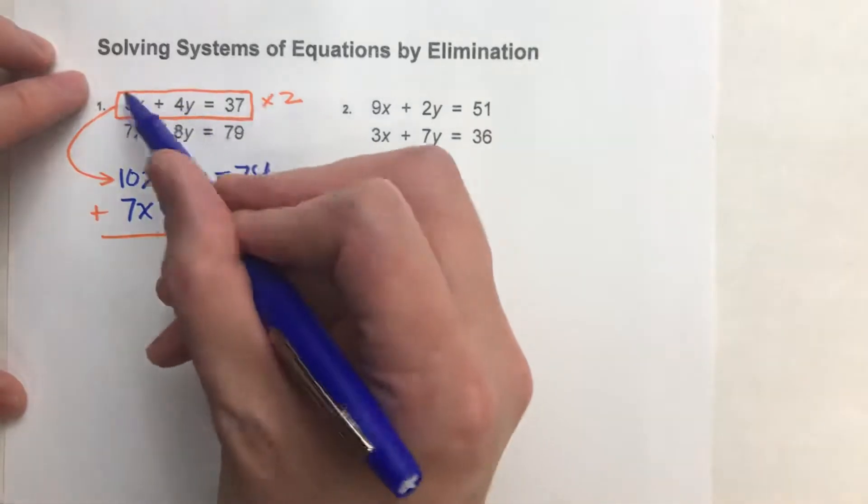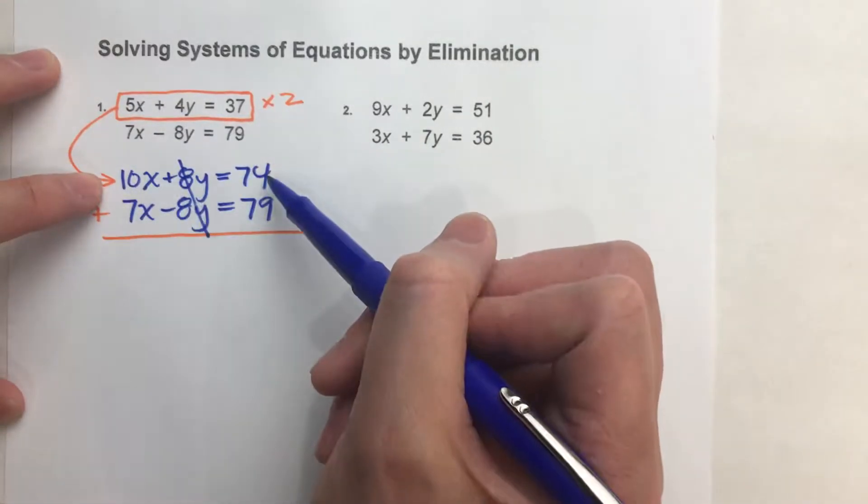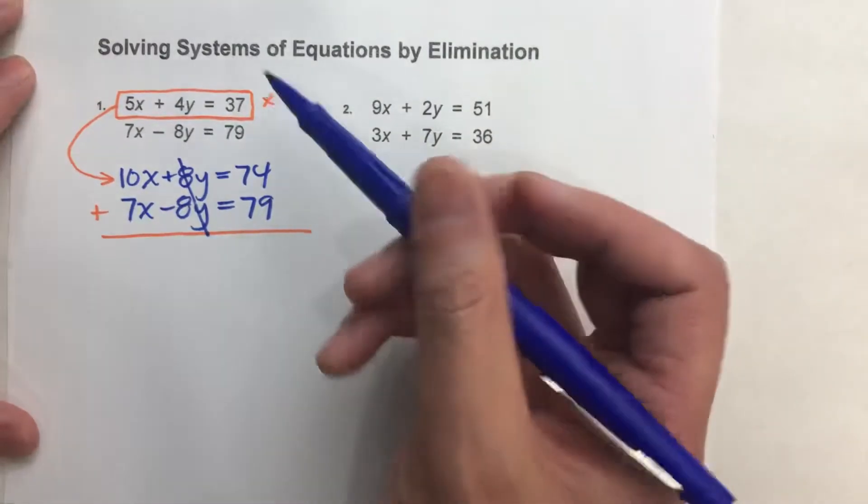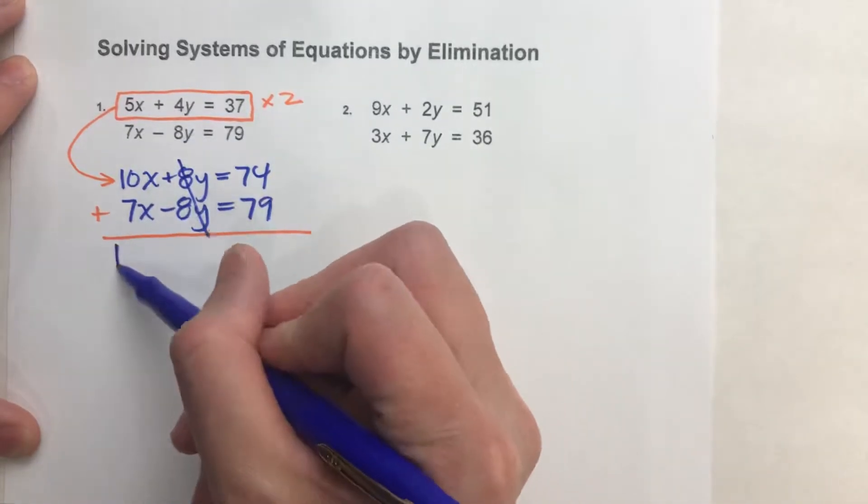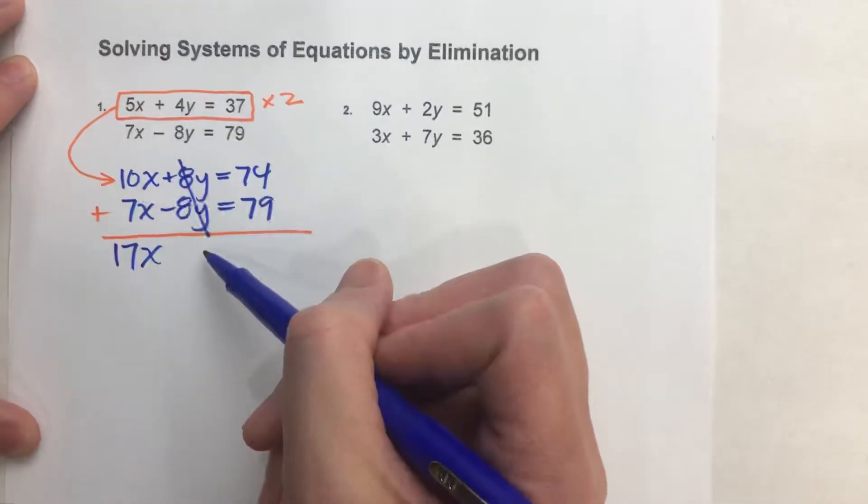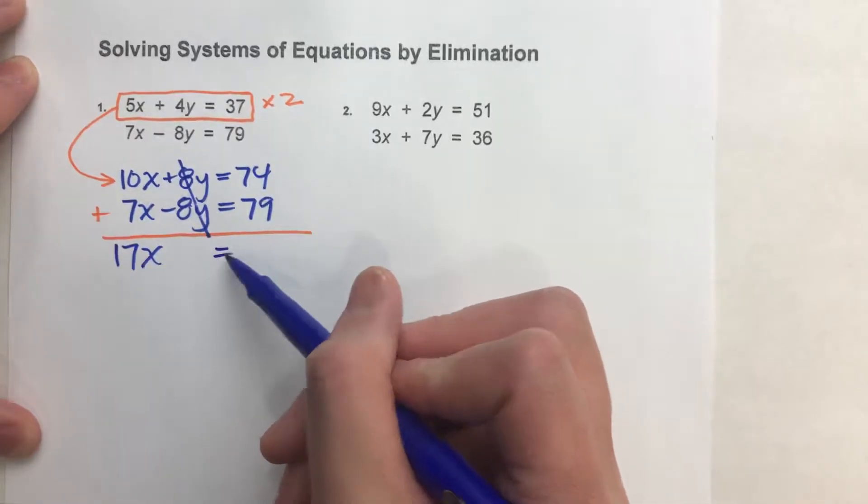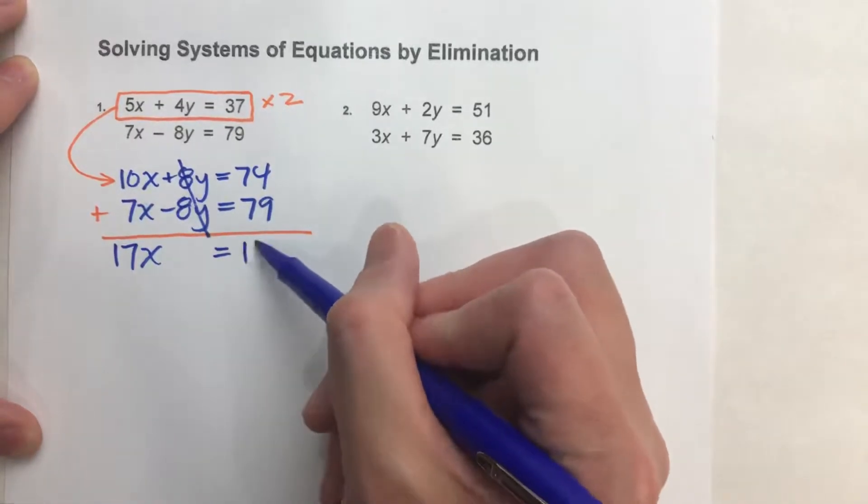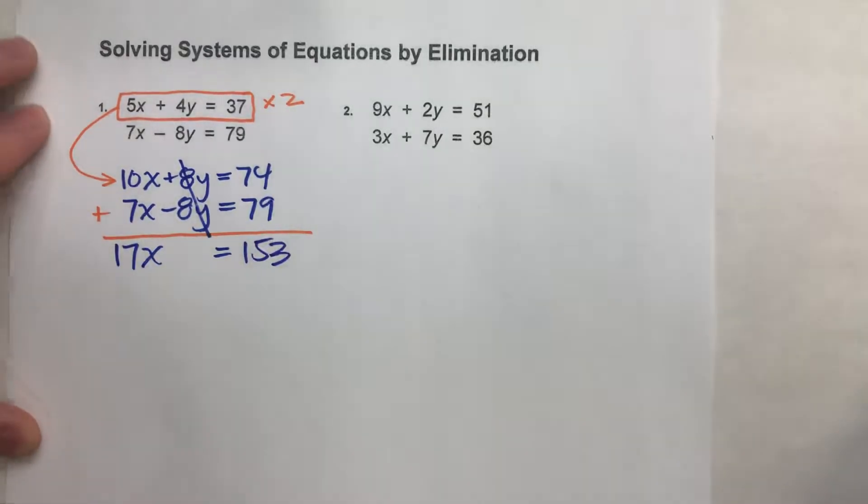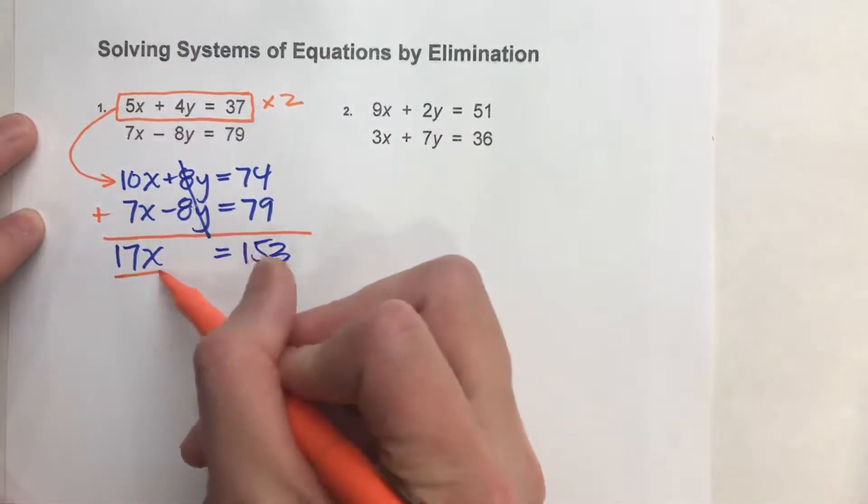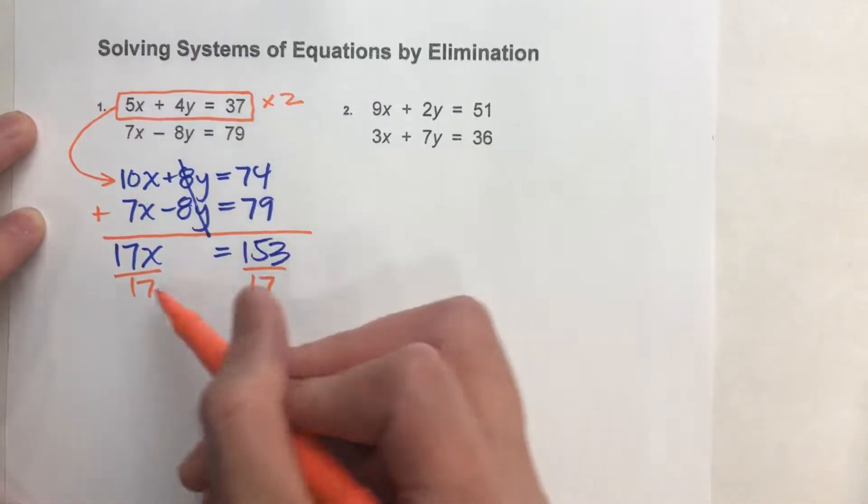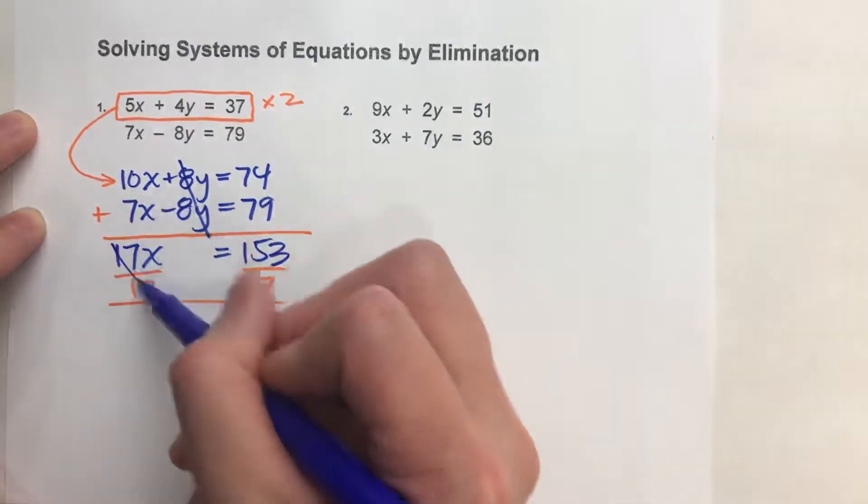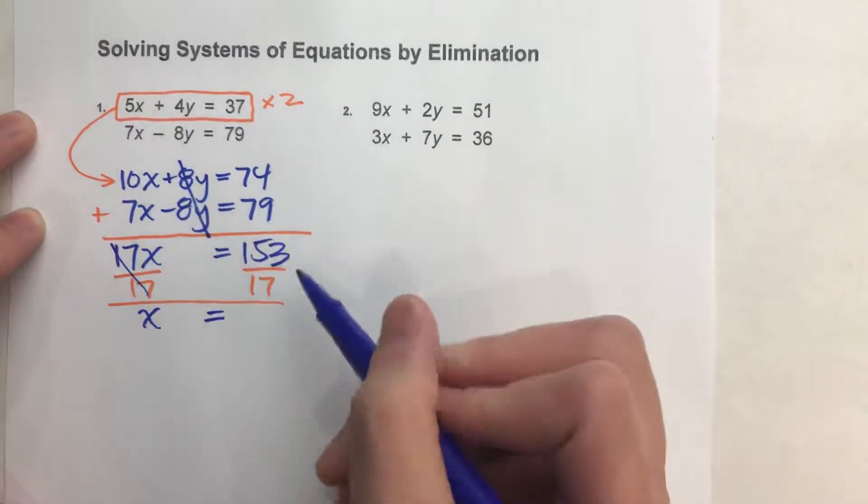But when I multiply that one by 2, I get this. And now let's finish the problem. 10x plus 7x is 17x. Of course, our y's are eliminated. And on the other side, 74 plus 79 is 153. And now it's an easy equation to solve. Divide both sides by 17. I end up getting x equals 9.